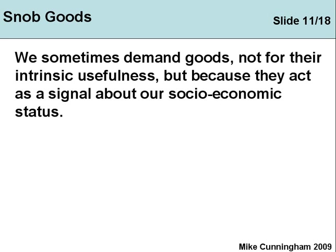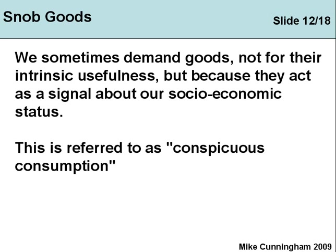They wanted to signal to the world that they were cultured people with a lot of money. In our society, people drive certain cars to signal to others that they are better off — if you've got a Porsche, it's a part of your socio-economic status and you feel superior. So snob goods are related to what economists call conspicuous consumption: you don't demand the Porsche because it's a good car — although apparently it is a very good car — but because it's signaling to the world that you are a superior sort of person.